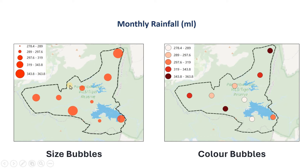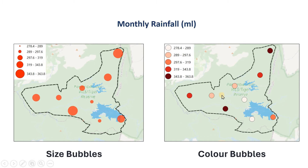We are going to create size bubbles and color bubbles. Size bubbles are straightforward — when the size gets bigger, the corresponding amount of rainfall received by those locations is also higher. For color bubbles, we use different shades of a particular color — in this case, different shades of red — to indicate rainfall amounts. Darker red means higher rainfall, lighter shades mean lower rainfall.